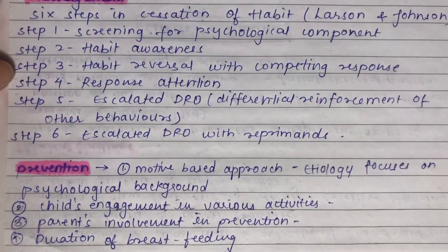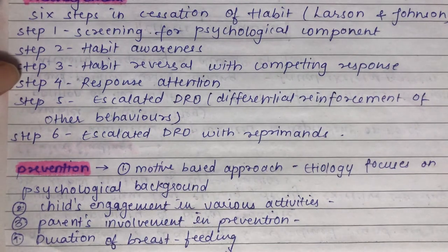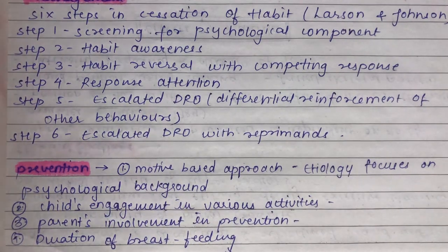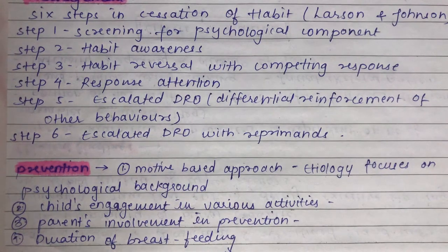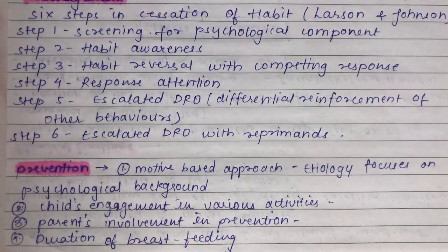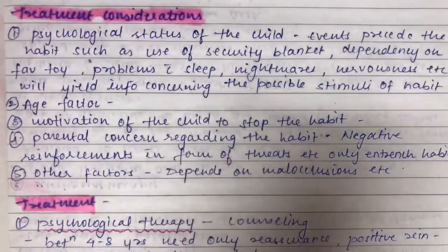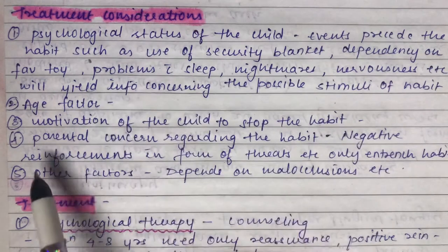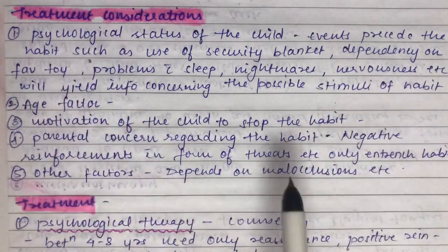For prevention, the motive-based approach focuses on the psychological background, the child's engagement in various activities, and parental involvement in feeding. Key prevention steps include feeding the child whenever hungry, feeding in a natural way, discontinuing the habit at an early stage, and encouraging the use of a dummy or pacifier instead of the thumb. Treatment considerations include the psychological status, age, motivation of the child, parental concern, and the type of malocclusion.